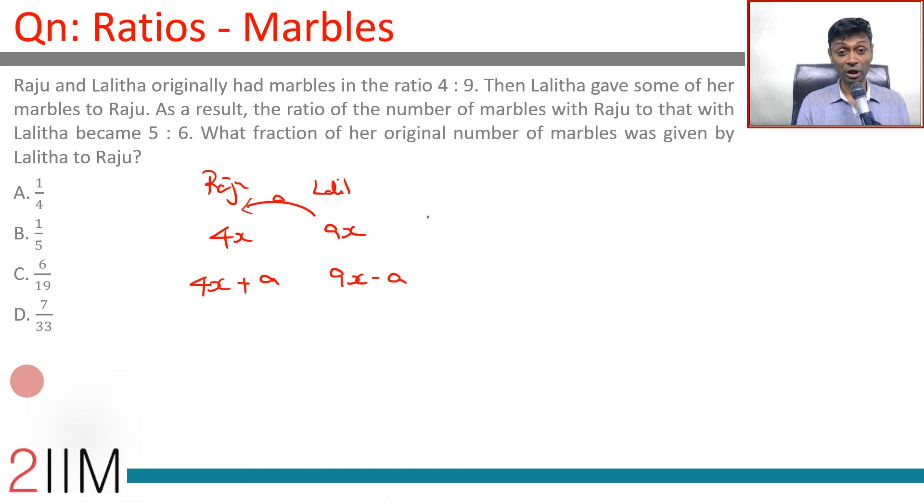As a result, the ratio of the number of marbles with Raju to that of Lalita becomes 5 to 6. What fraction of her original number of marbles was given by Lalita to Raju? She gave away A out of 9x. We are looking to find A by 9x.